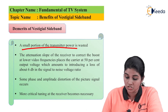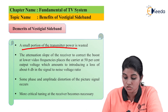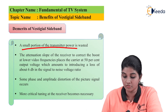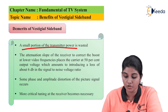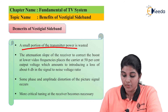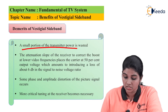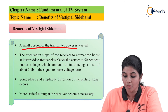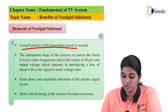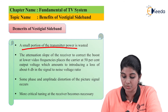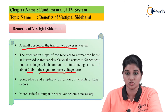The second disadvantage is the attenuation slope of the receiver, which is needed to correct the boost at low video frequencies. This places the carrier at 50% output voltage, which amounts to introducing a loss of about 6 dB in the signal-to-noise voltage ratio.